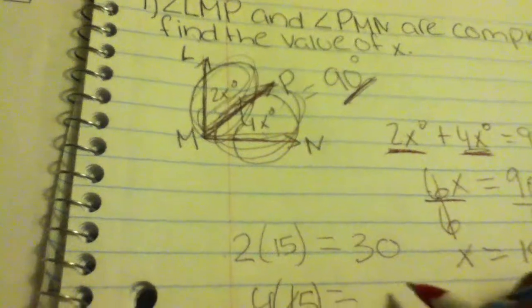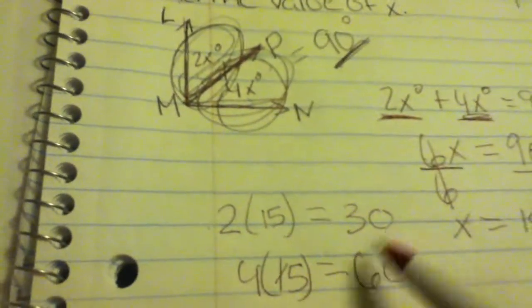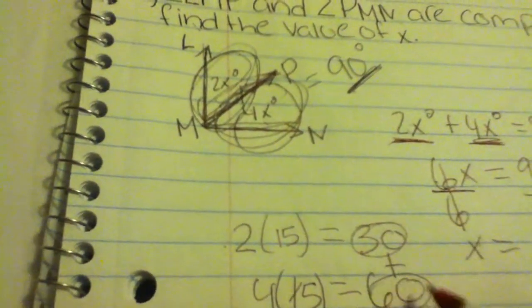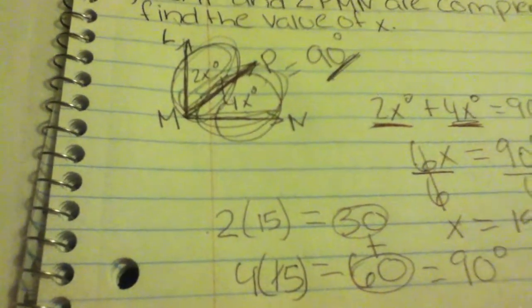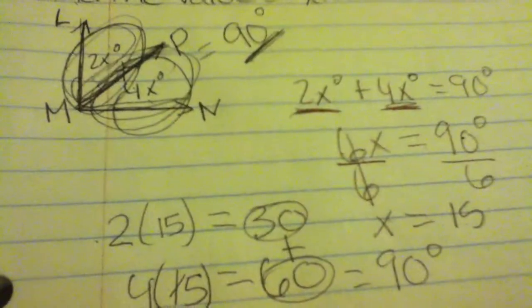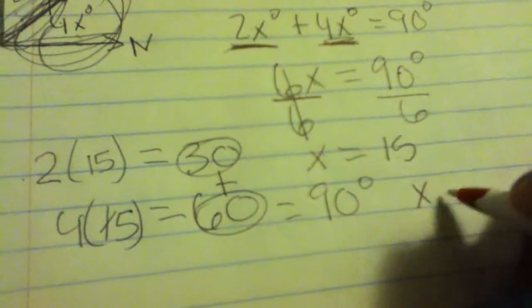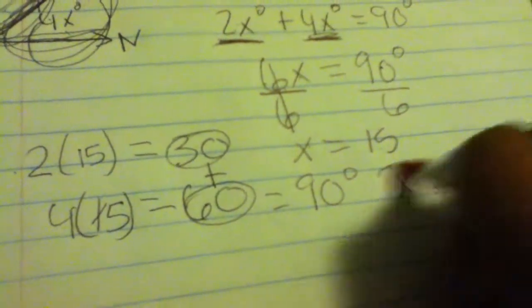When you add 30 and 60 you get 90 which means that is correct. At the end the only thing you have to write down on paper is that x equals 15 and you're done.